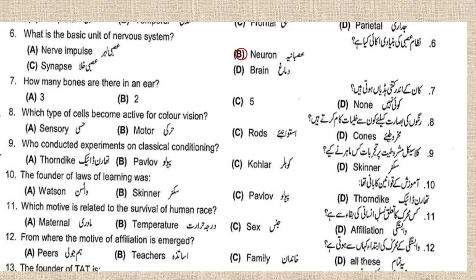Number seven: how many bones are there in the ear? There are three bones — the three smallest, tiny bones that are present in the ear. Number eight: which type of cell becomes active for color vision? Cones become active for color vision.